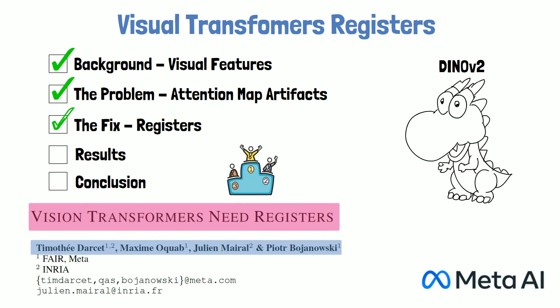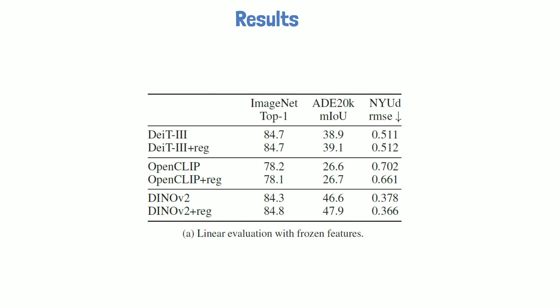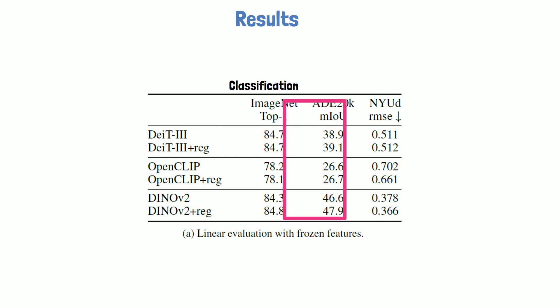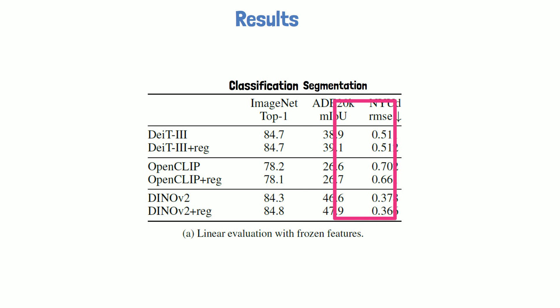Now let's look at some results. In a comparison table for models with and without registers across three tasks: for image classification on ImageNet, results are similar, slightly better for DINOv2 with registers by a small margin. For image segmentation, results are slightly better with registers, more significantly for DINOv2. For depth estimation — where a lower score is better — performance with registers is better for CLIP and DINOv2, again by a small margin, and almost equal for DIT.